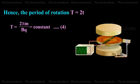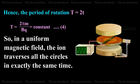period of rotation T is equal to 2T. Therefore, T is equal to 2 pi M by BQ is equal to constant. So, in a uniform magnetic field, the ion traverses all the circles in exactly the same time.